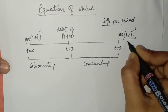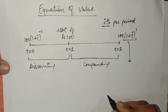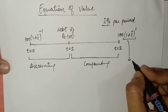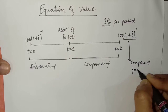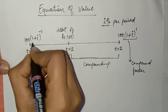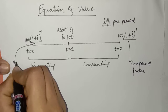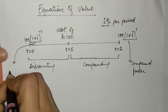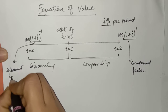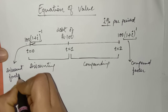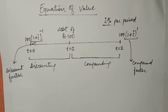The factor (1 + I)^N is known as the compound factor, and in case of discounting, (1 + I)^(-N) is known as the discount factor. This is the concept of discounting and compounding.